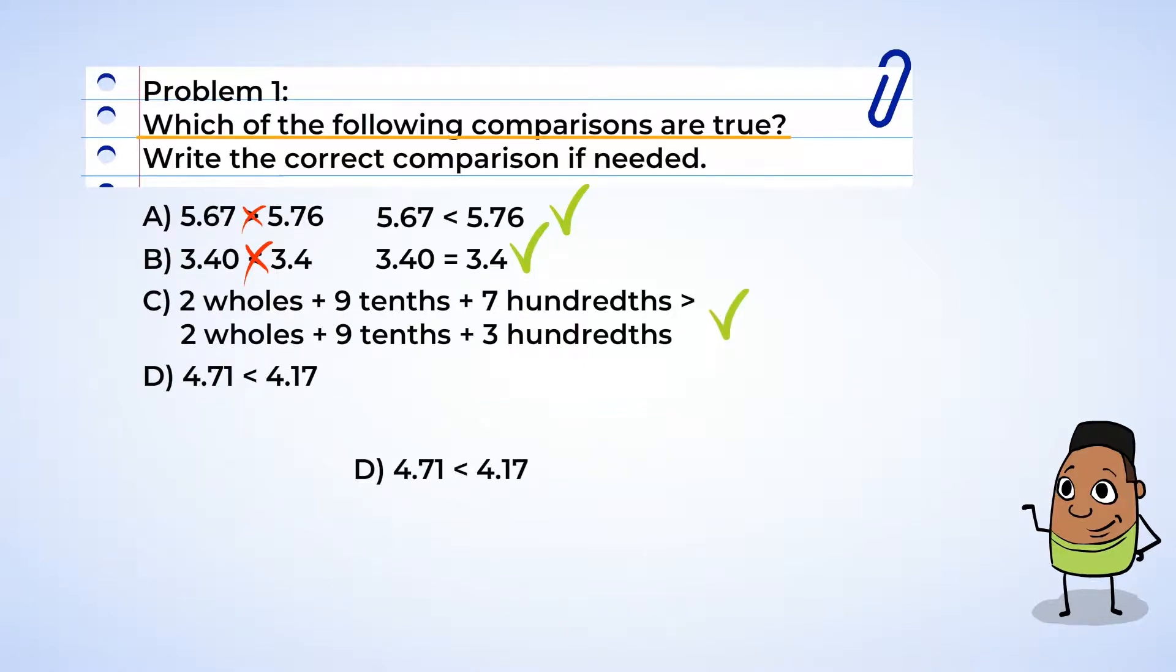And last up is part D. 4 and 71 hundredths is less than 4 and 17 hundredths. Okay. Once more, the ones are both 4. So let's move on over and look at the tenths place. 7 is not less than 1. Alright, this one's false. And we're gonna need to change the symbol to greater than since 4 and 71 hundredths is greater than 4 and 17 hundredths. Great job comparing decimals and fixing those mistakes.